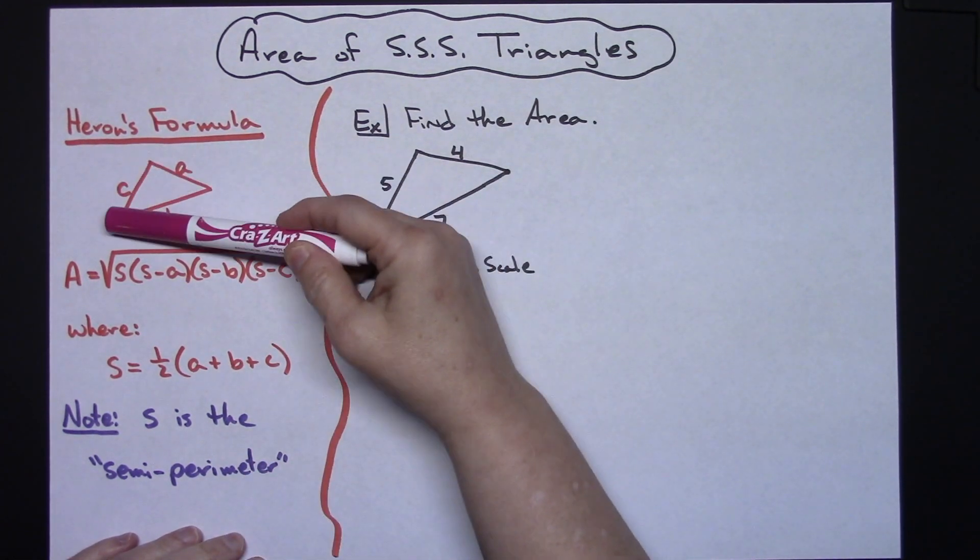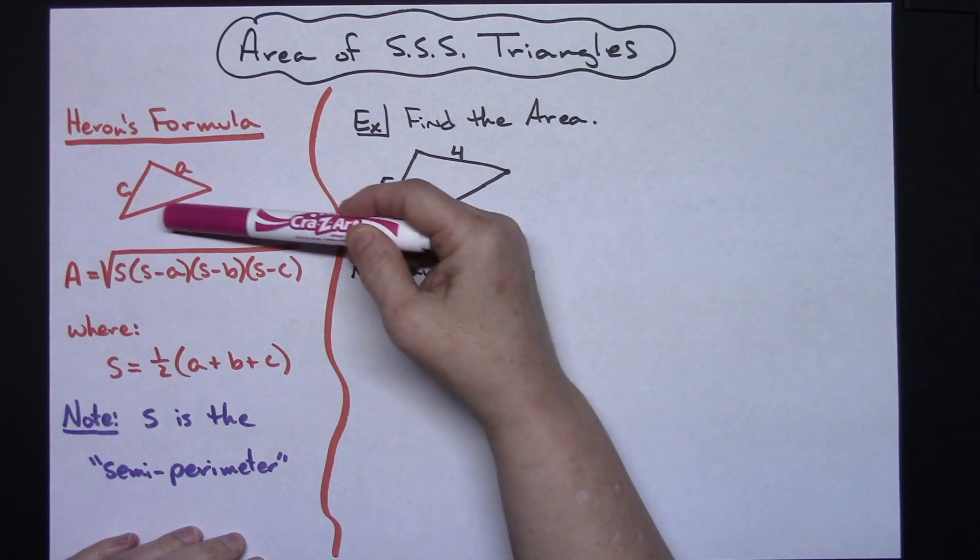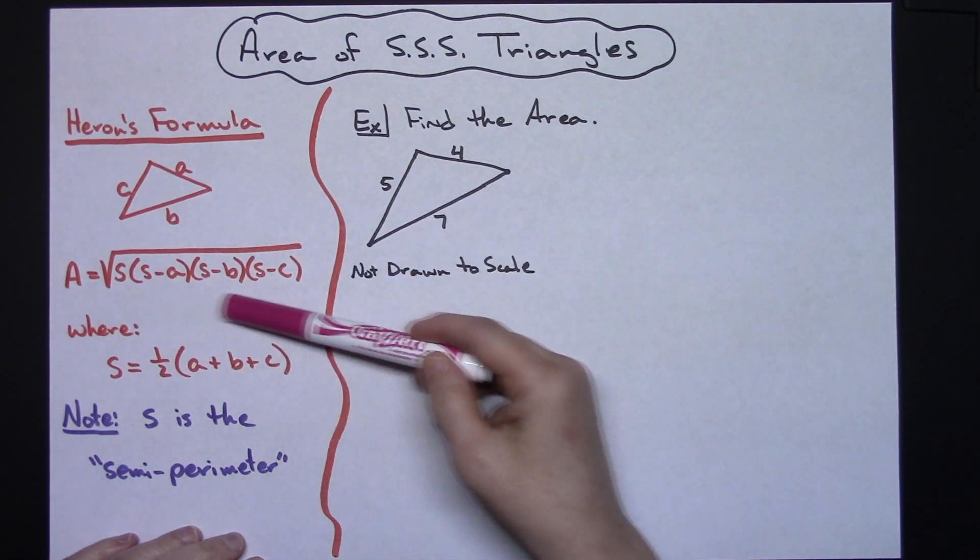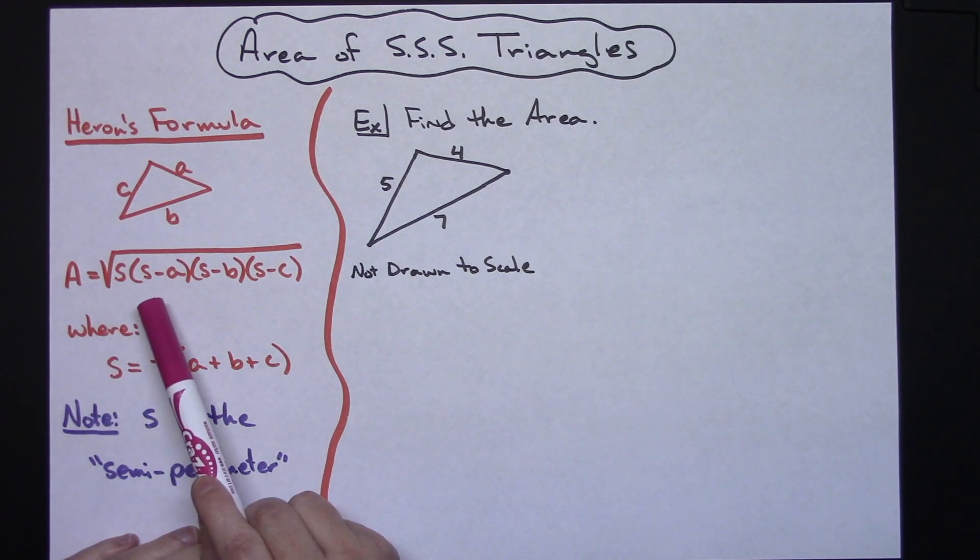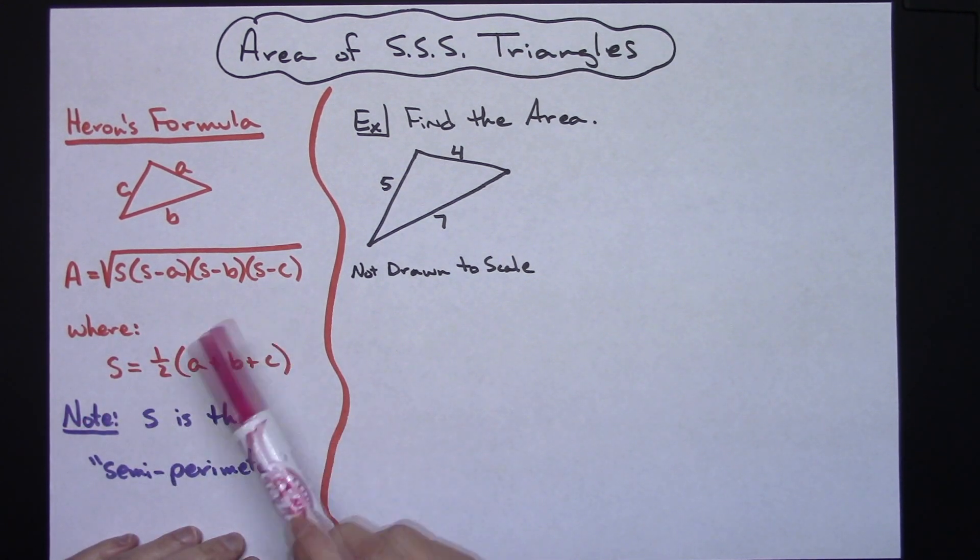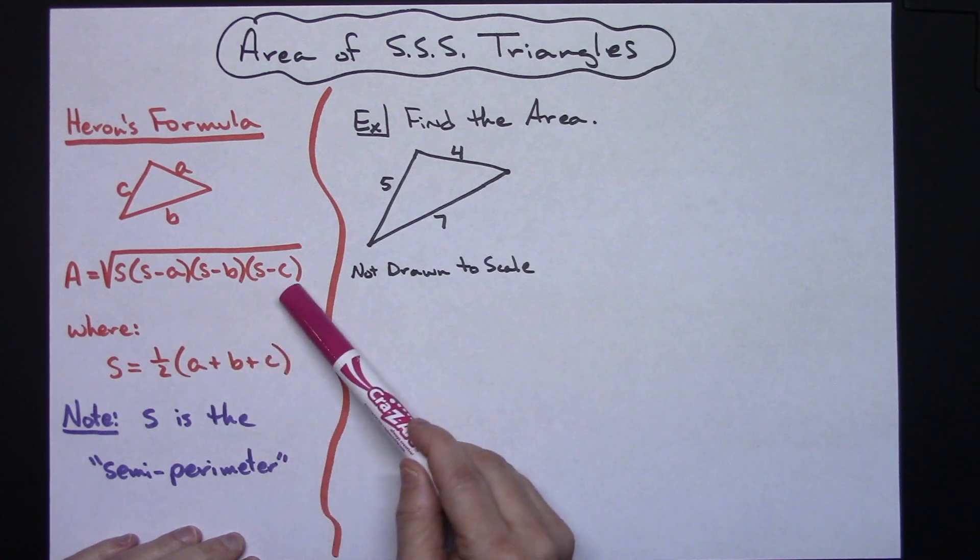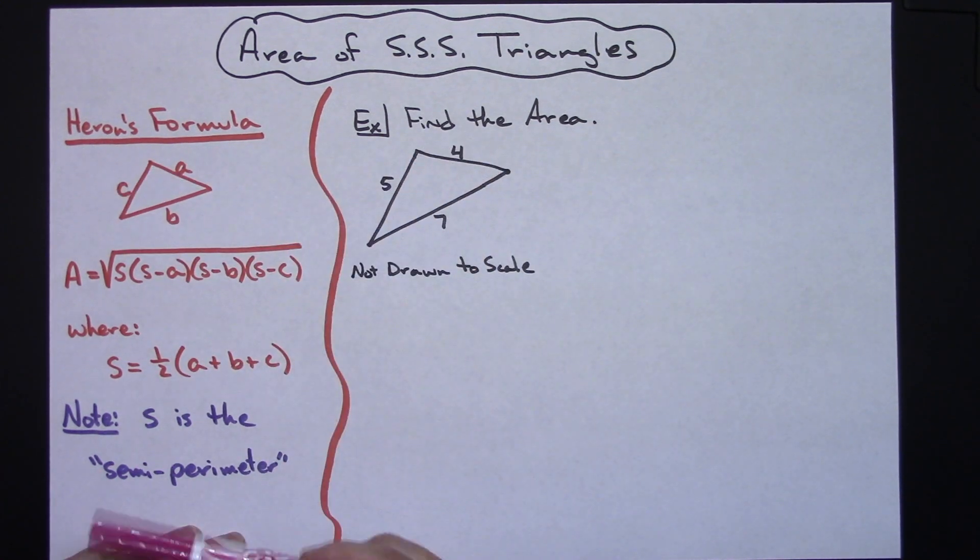If we have a triangle where we know all three sides, then we can use the formula: the area is equal to the square root of s times (s minus a) times (s minus b) times (s minus c), where a, b, and c are the three sides of the triangle.